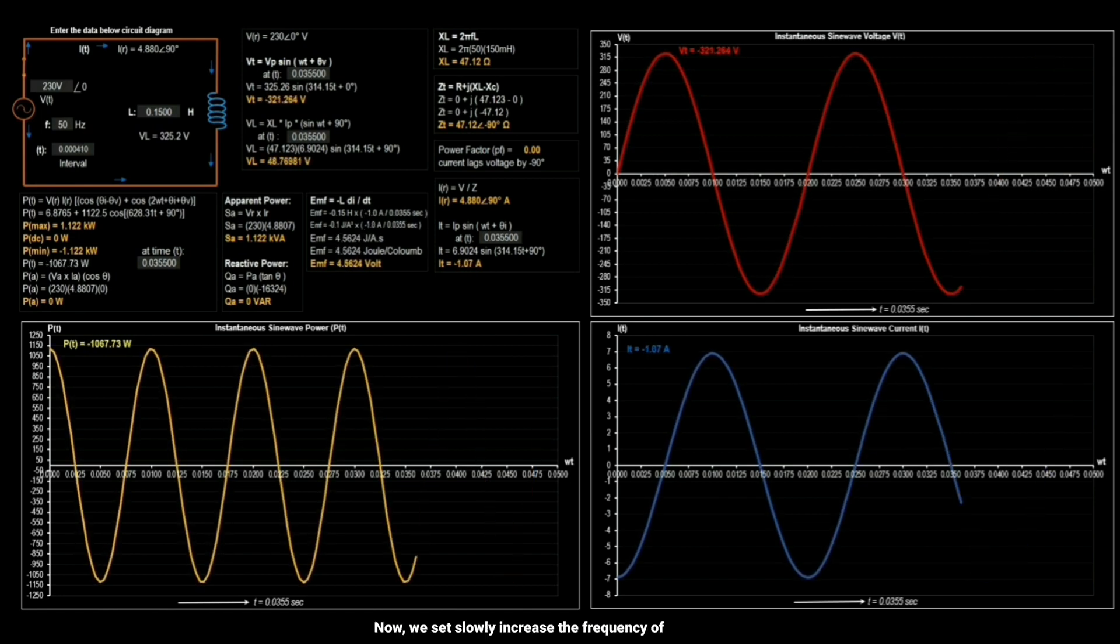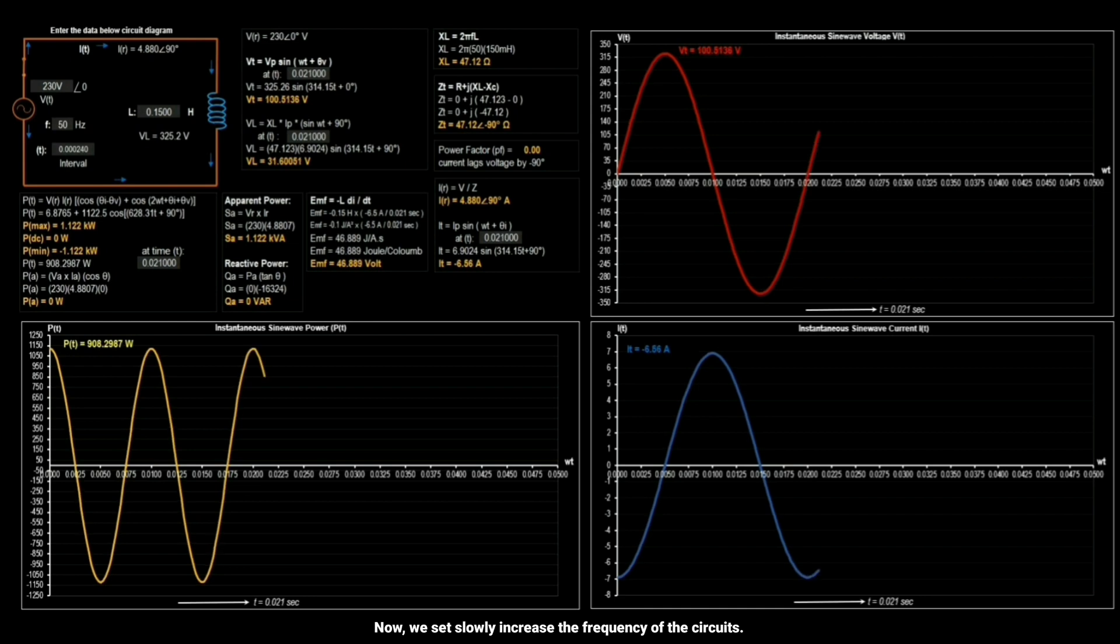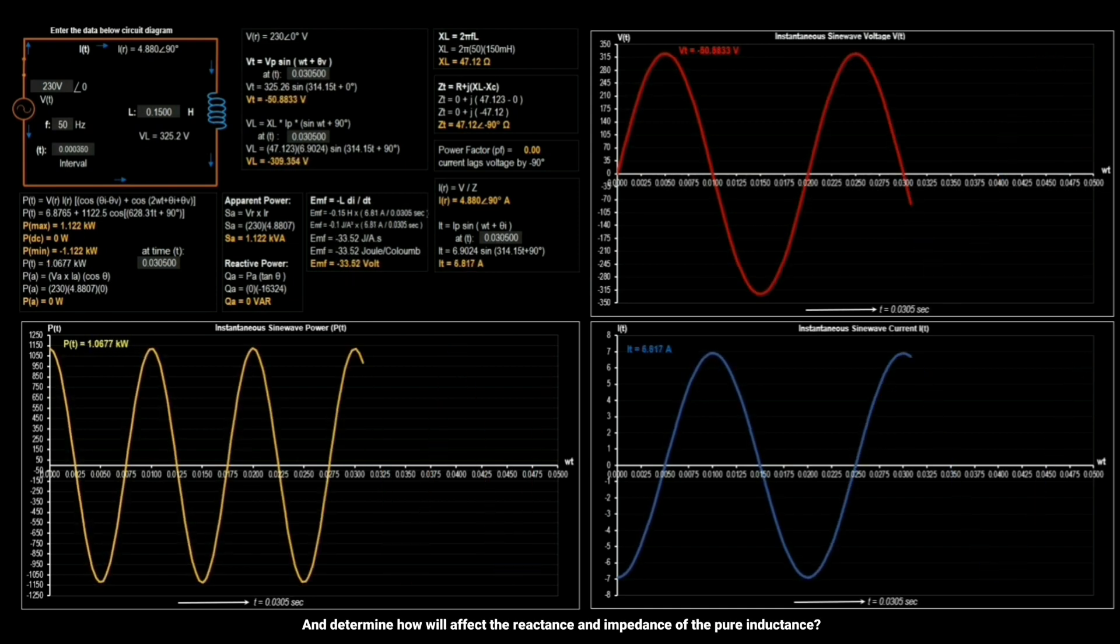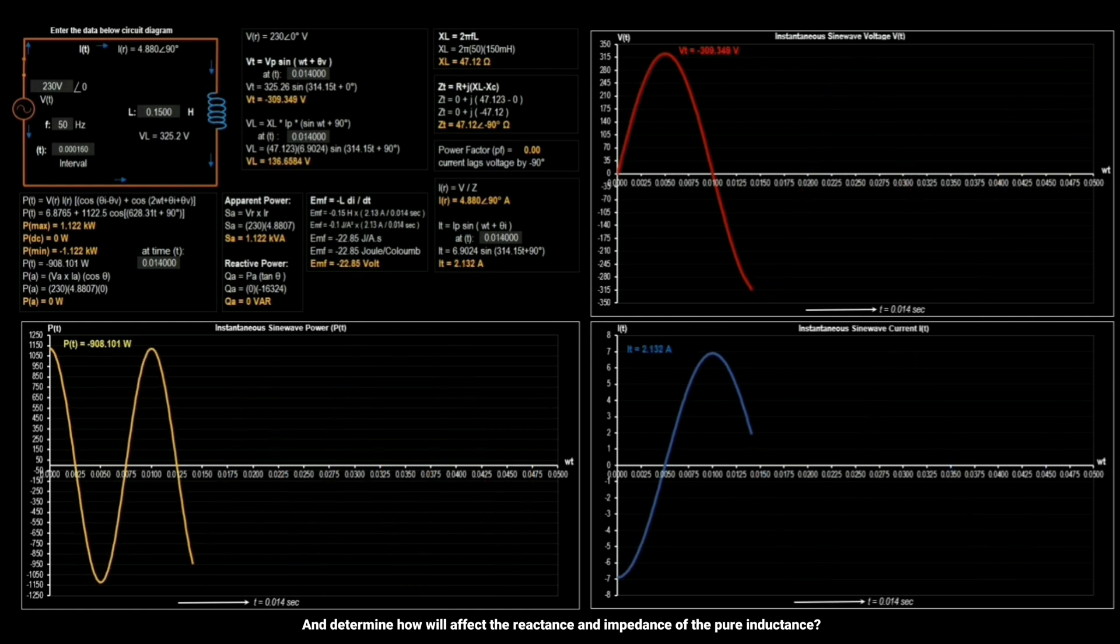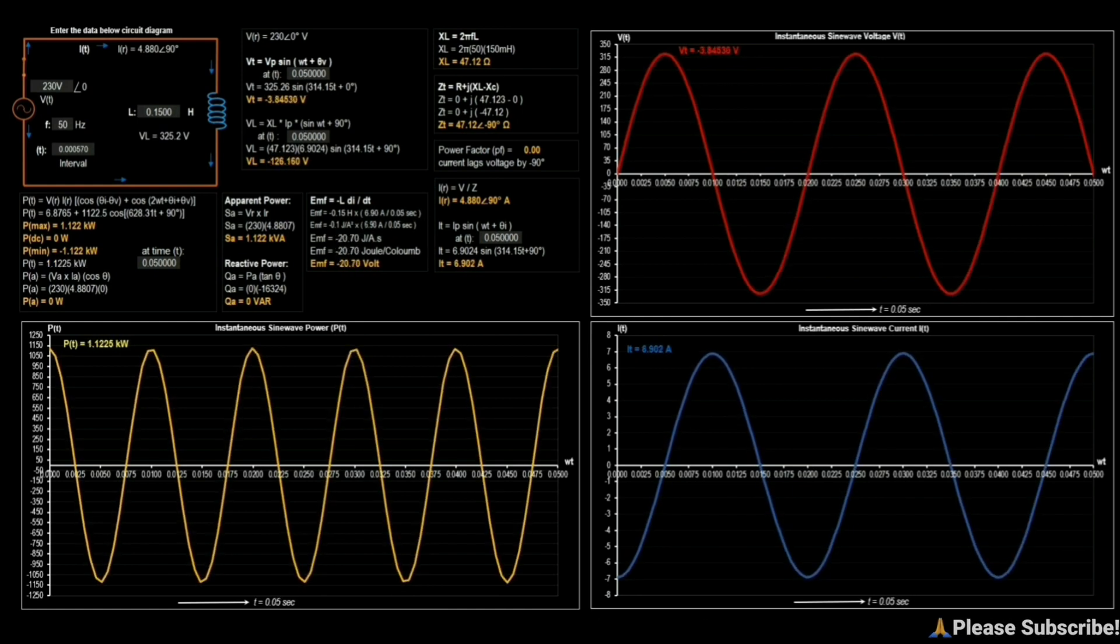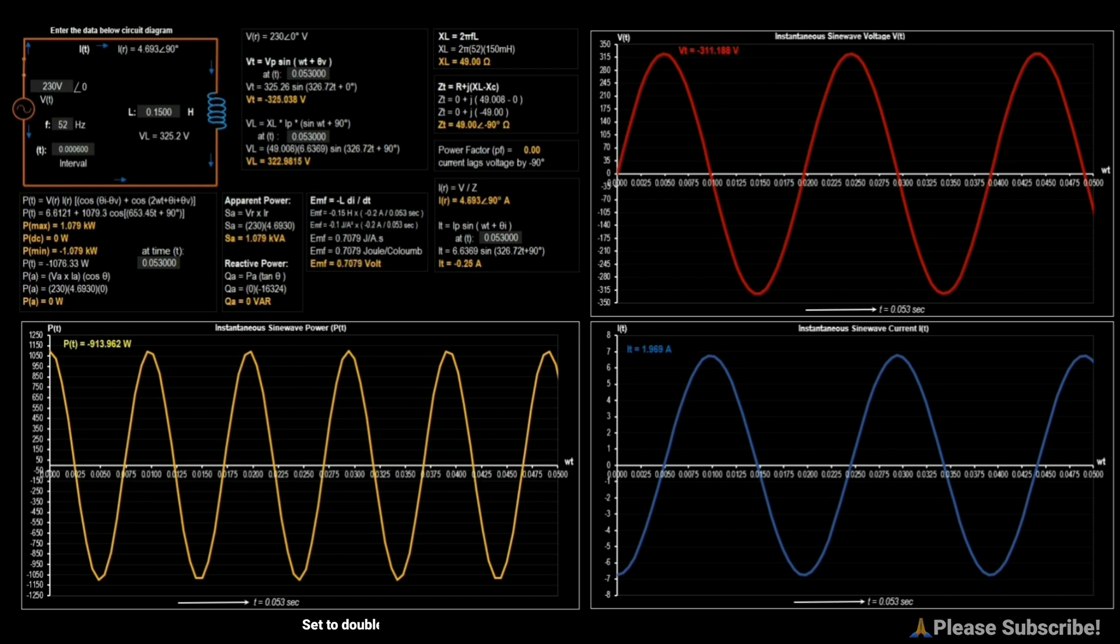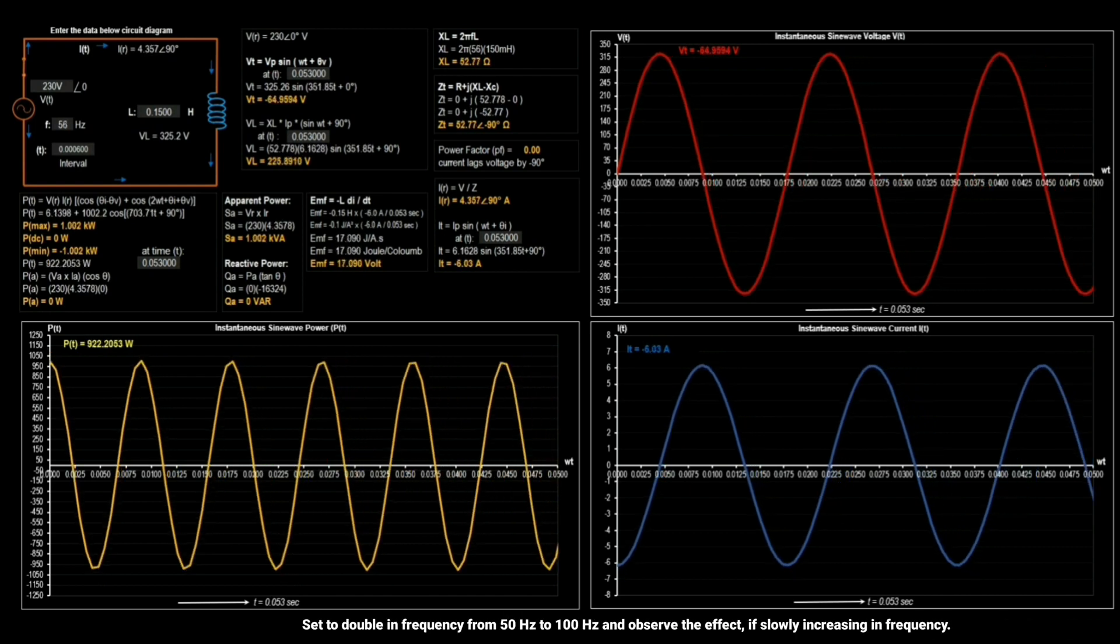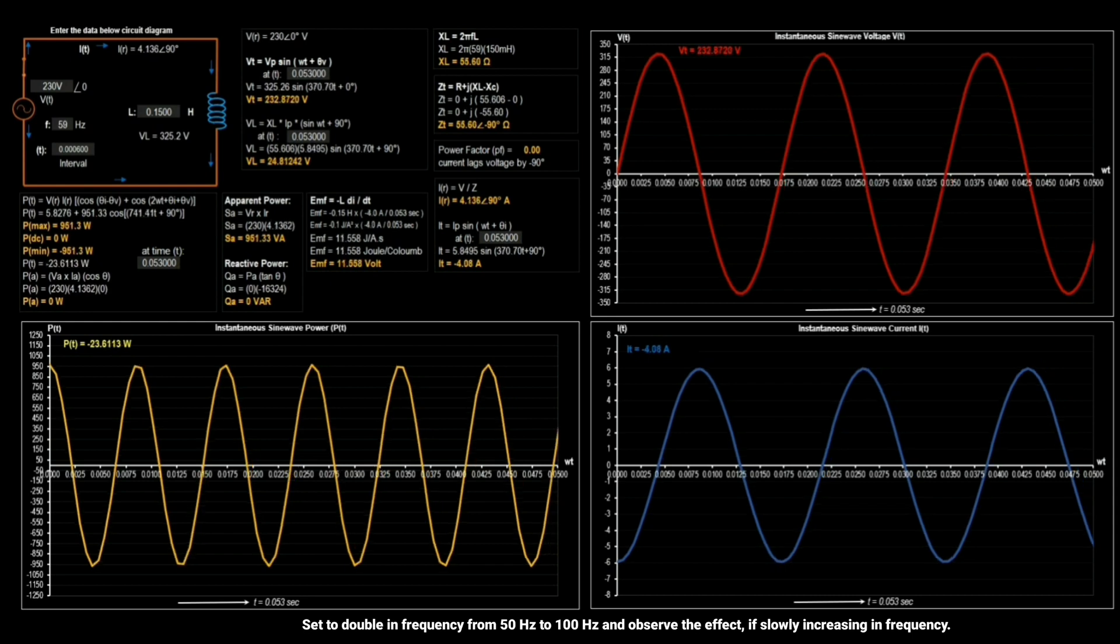Now we set slowly increasing the frequency of the circuit and determine how will affect the reactance and impedance of the pure inductance. Set to double in frequency from 50 Hz to 100 Hz and observe the effect if slowly increasing in frequency.